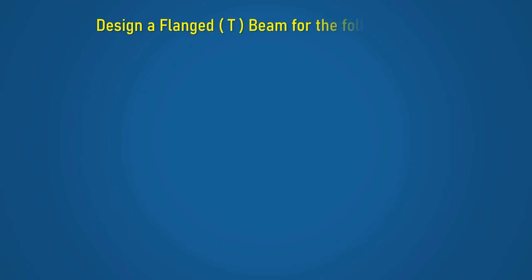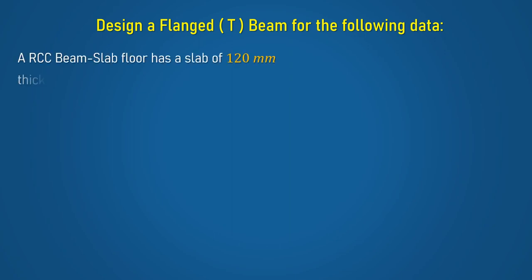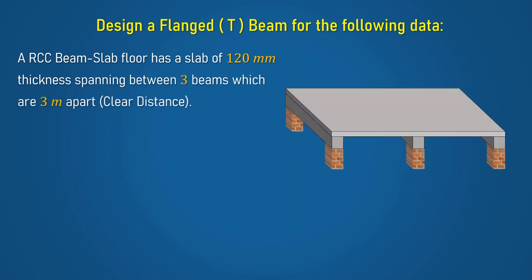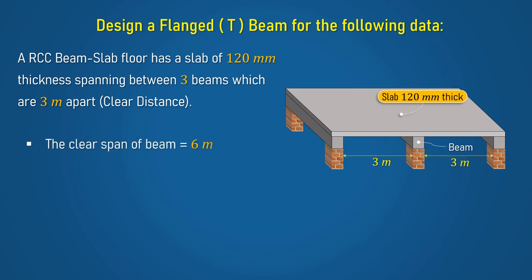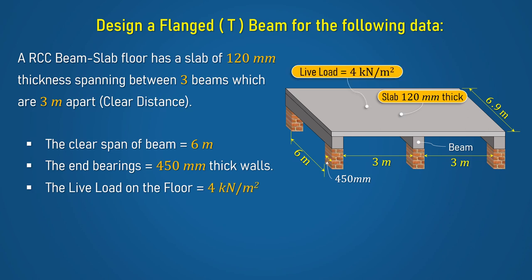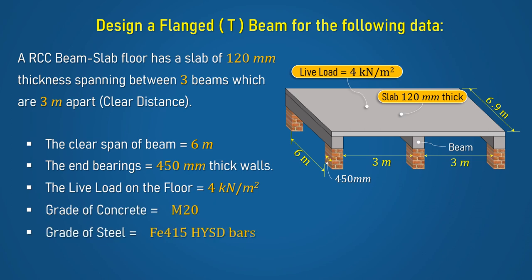In this video, we will learn the design of a simply supported flanged T-Beam for an RCC beam-slab floor of 120mm thickness spanning between 3 beams which are 3m apart. The clear span of the beam is 6m. The end bearings of the beam are 450mm thick brick walls. The live load acting on the slab floor is 4 kN per meter square. The grade of concrete is M20 and grade of steel is Fe415.